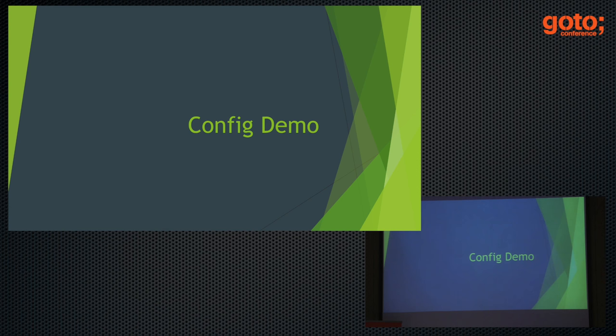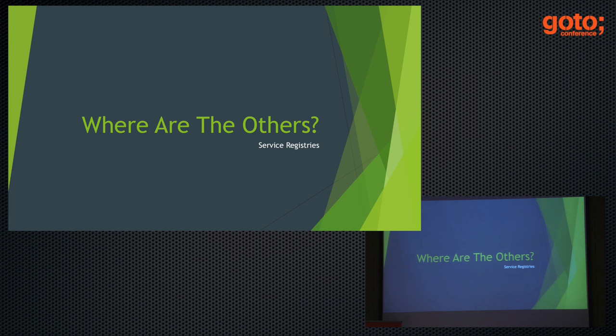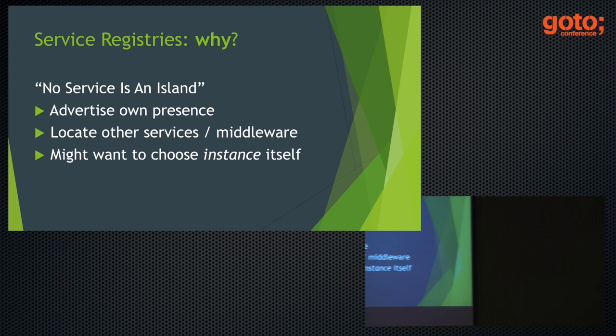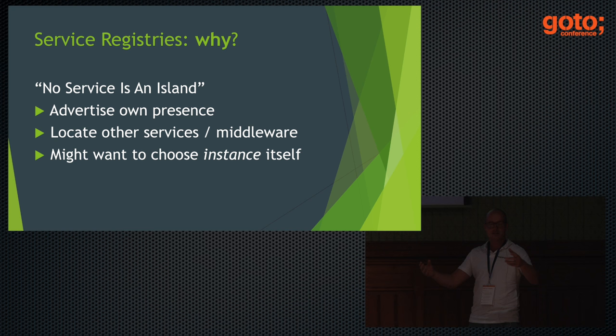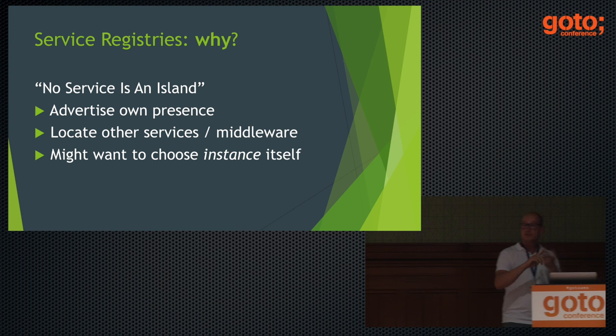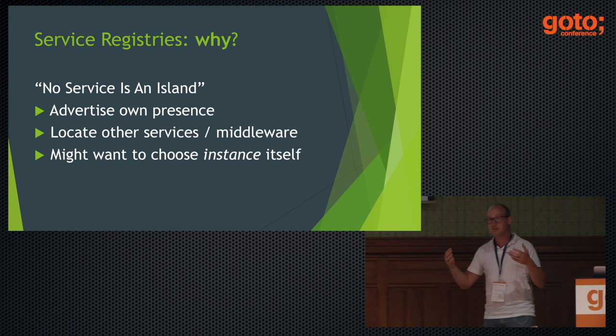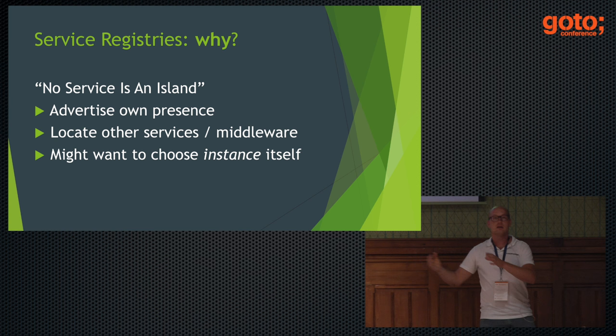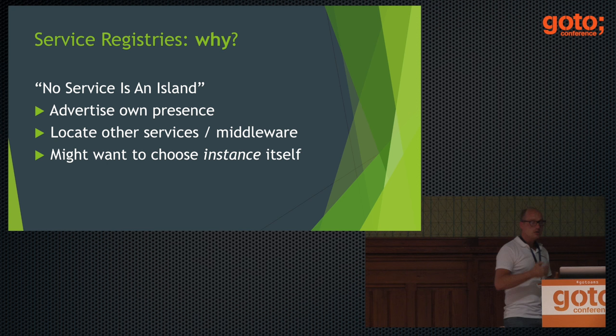That's the configuration part. Now we know who we are — where are the other ones? Spring Cloud supports the notion of a service registry. The idea is obvious: a distributed system is distributed because these things are not islands — they need to communicate. The first thing a service needs to do when it starts up with its configuration is advertise its presence: 'Hey, I'm here, this is my name, this is where you can find me, and this is where you can check if I'm doing okay.'